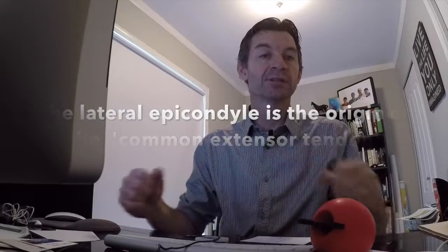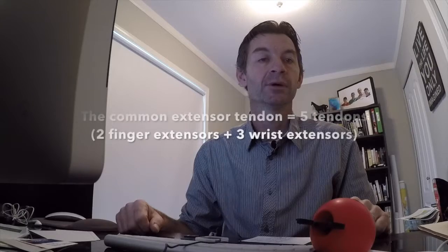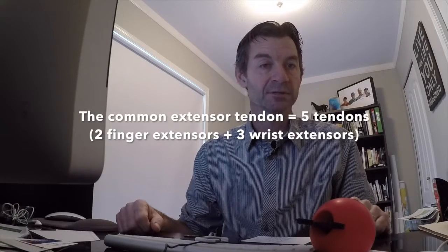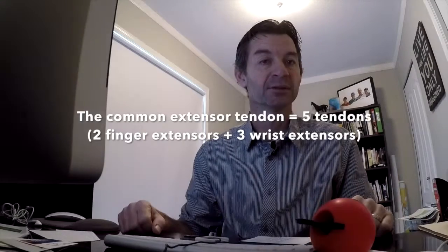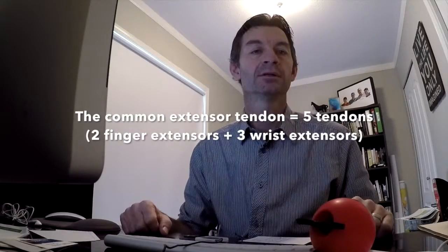The common extensor tendon is made of wrist extensors, that is true. But we, for some reason, ignore the idea that there are two finger extensors. Someone may ask, what do the finger extensors have to do with grip?